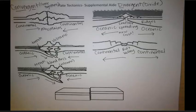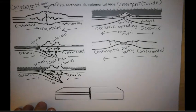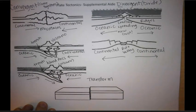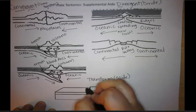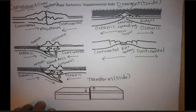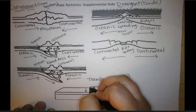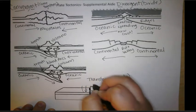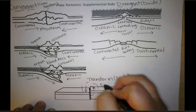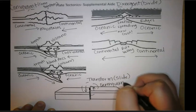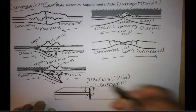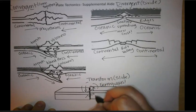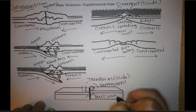That brings us to our last boundary: the transform boundary. So we're going to write 'transform,' and in parentheses, 'slide,' because these two plates are going to be sliding past each other. We're going to draw two parallel arrows going past each other. The big thing that forms here is earthquakes — in fact, transform boundaries are known for major earthquakes. We're going to draw a little circle representing an epicenter for our earthquakes. We also get some cracks called fault lines along the way, since it doesn't slide past in a perfect line.